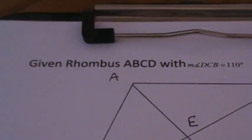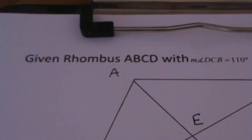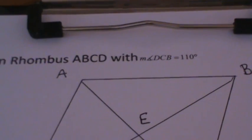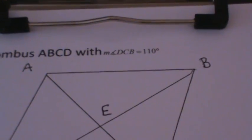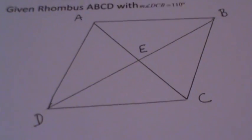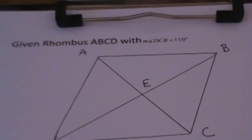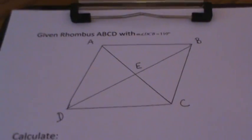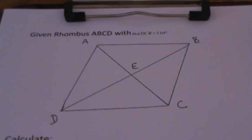In this problem, we're given a rhombus ABCD with the measure of angle DCB equaling 110. The first thing we need to do is ask ourselves what are some of the properties of a rhombus that we need to be aware of to help us solve this problem.